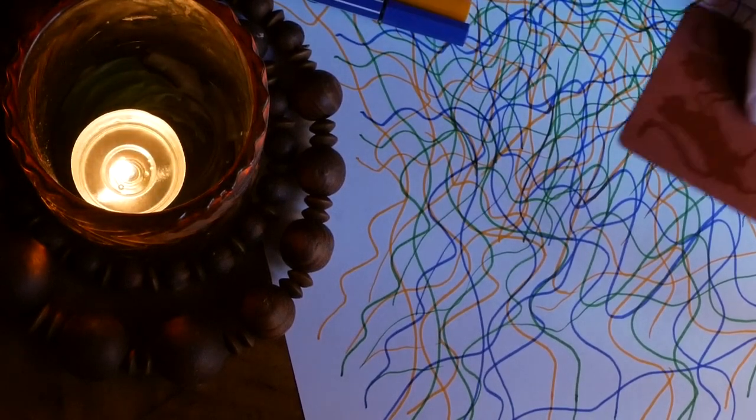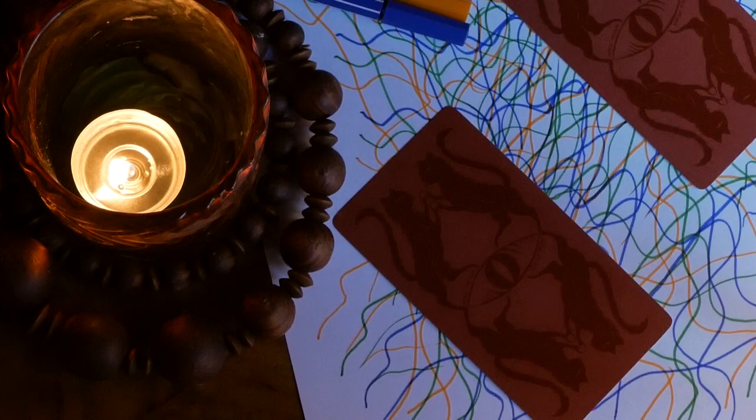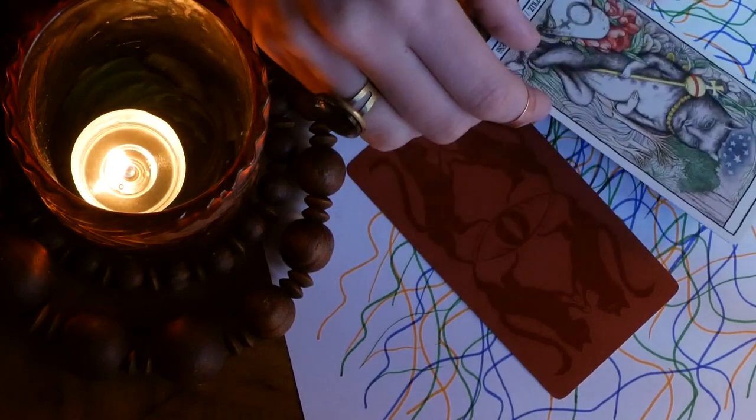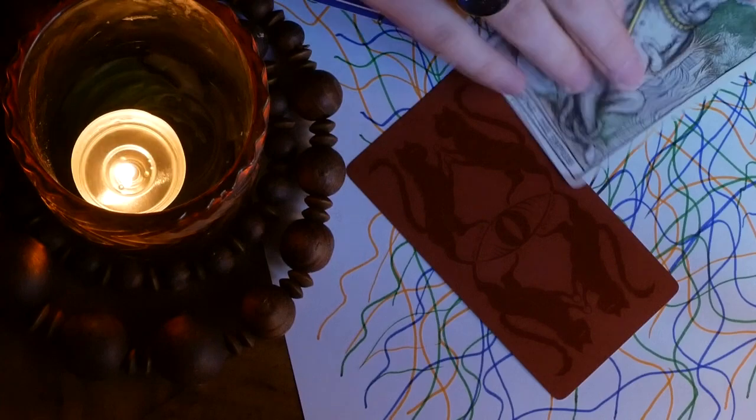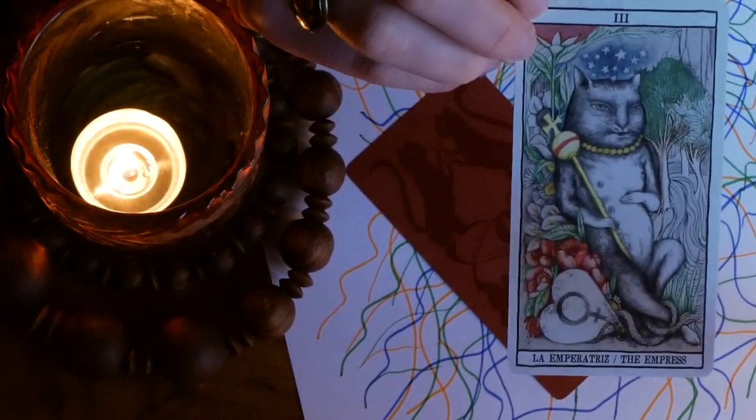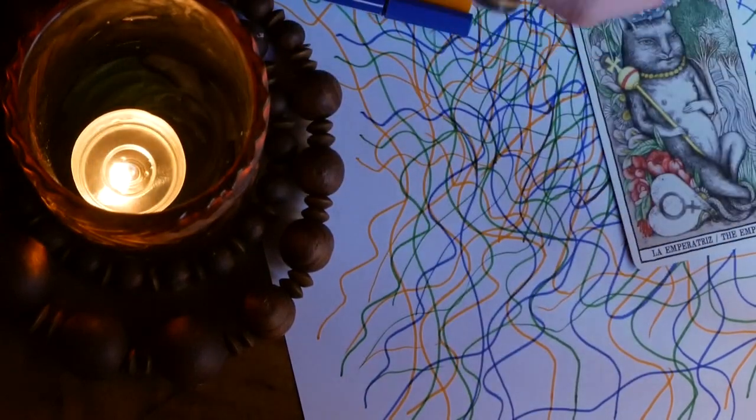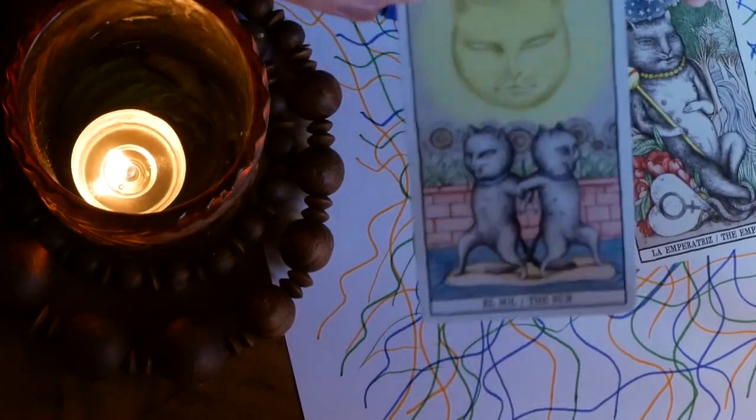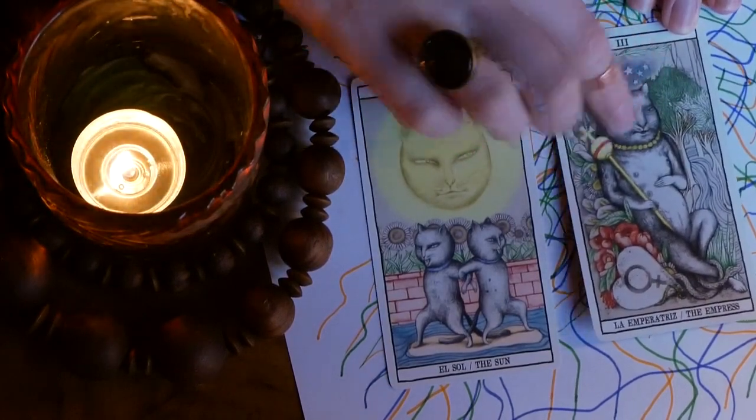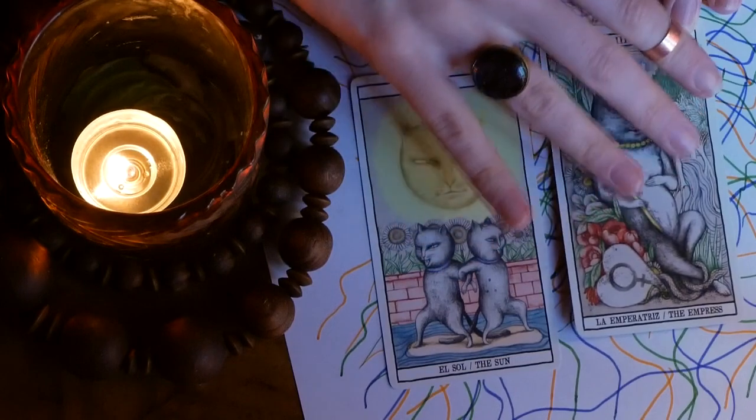We have two jumping cards here. Let's see what's your message. First off, we have the Empress, and then we have the Sun. So now that we have your cards, we can start the affirmations, right? Are you ready?